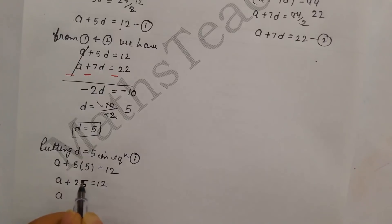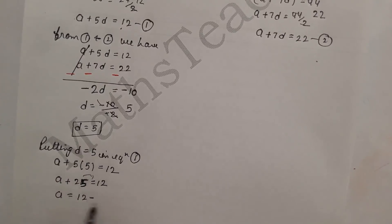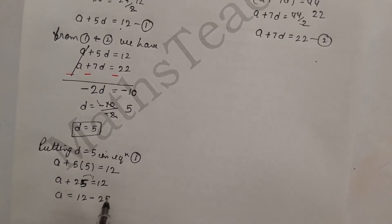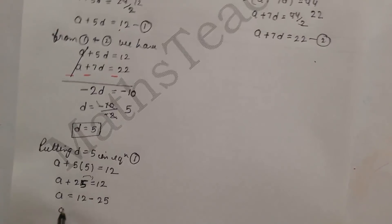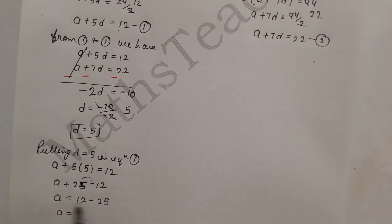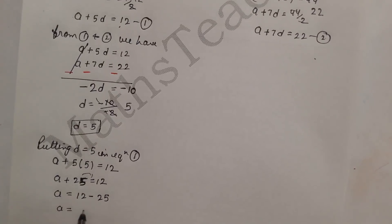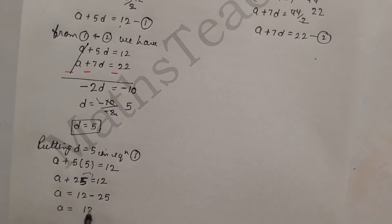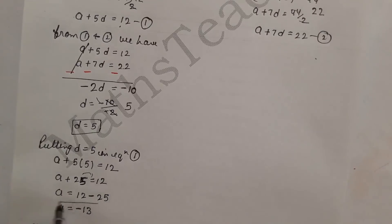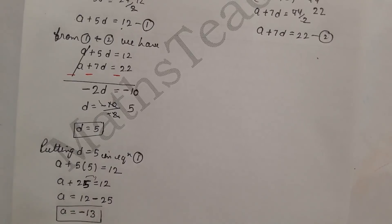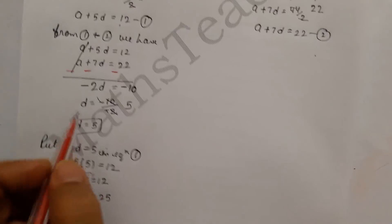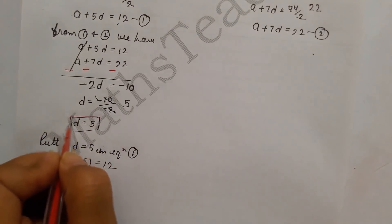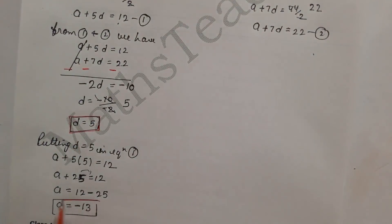Now substituting d = 5 into Equation 1: a + 5×5 = 12, so a + 25 = 12, therefore a = 12 - 25 = -13. So a = -13 and d = 5.